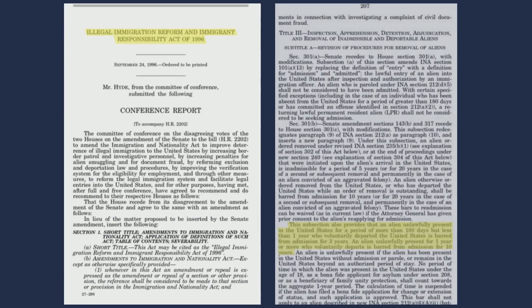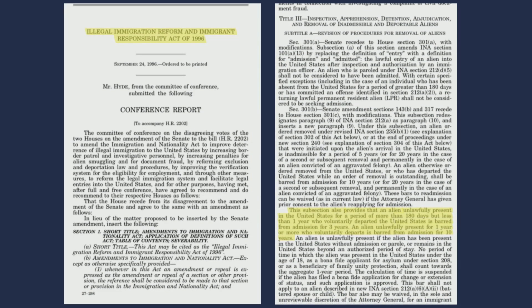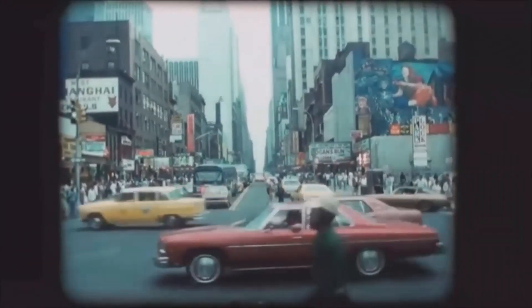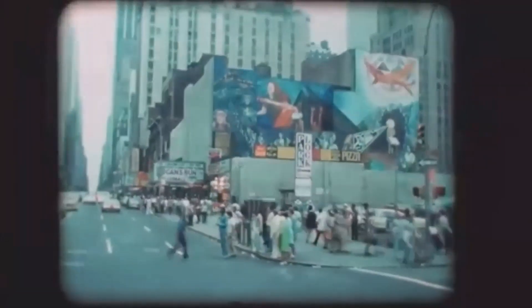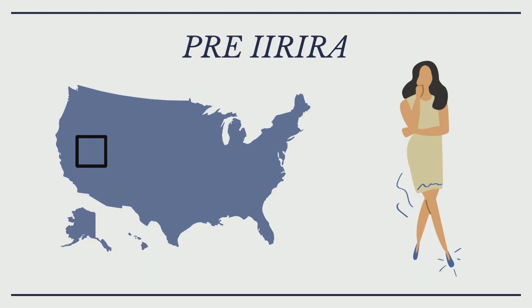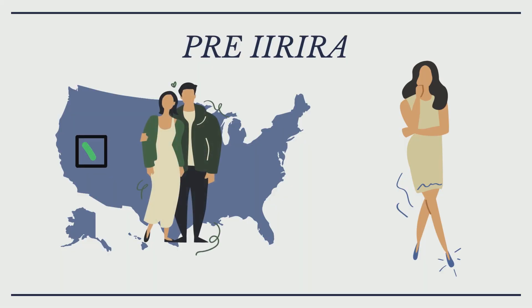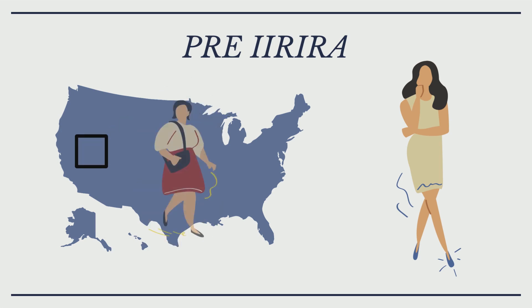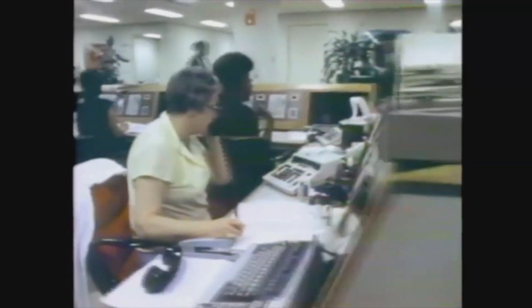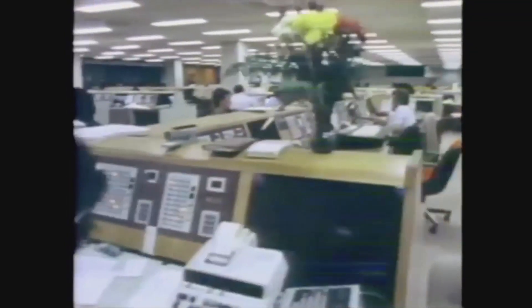Although the law introduced many new programs to the immigration system, one notably impactful facet of IIRAIRA was the 3- and 10-year bar rule. Before 1996, there were a limited number of ways a person could immigrate to the United States legally. An immigrant could obtain lawful status if they were married or in the immediate family of an American citizen. IIRAIRA changed the way this process worked. It introduced 3- and 10-year bars: if you have been here for more than 180 days illegally and then voluntarily leave the United States, you are barred from coming back for 3 years.